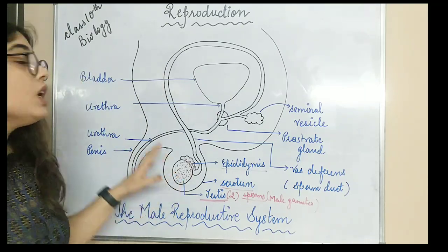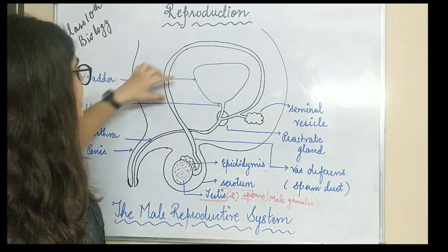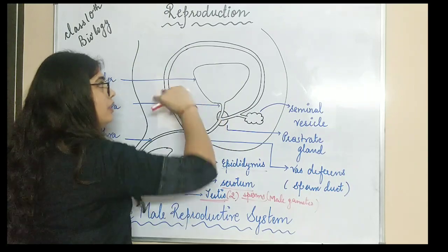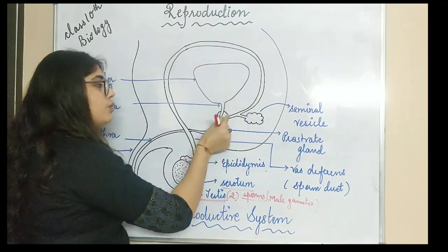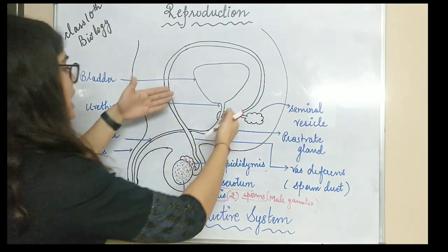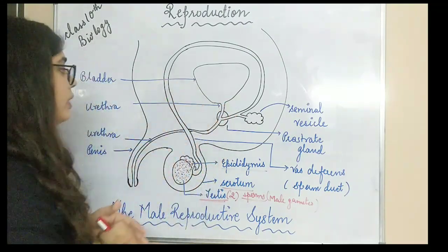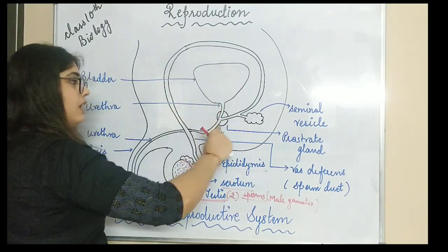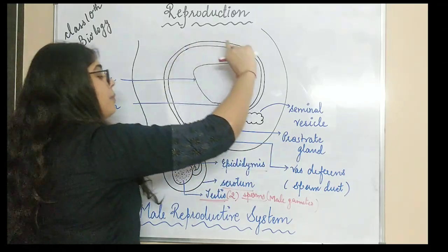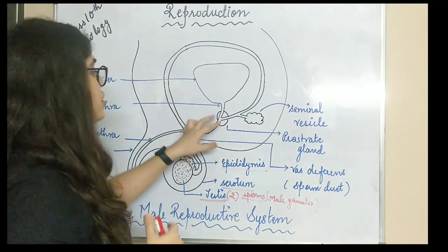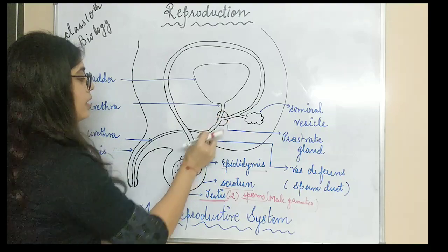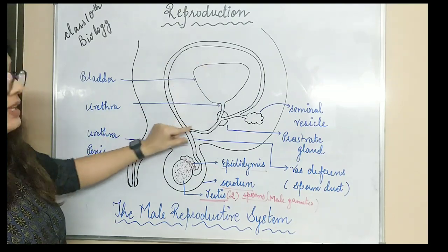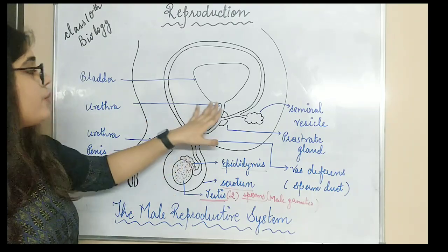This is the urinary bladder in your body, which is present to produce urine. The urinary bladder releases a tube called the urethra. The vas deferens and the urethra meet at one place — they fuse and form one single tube, which is together known as the urethra. Urine as well as sperm will come out through the same passage — through the penis.